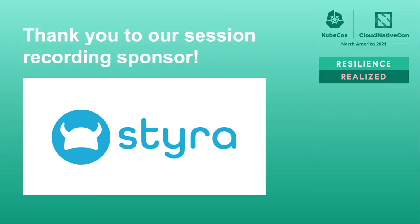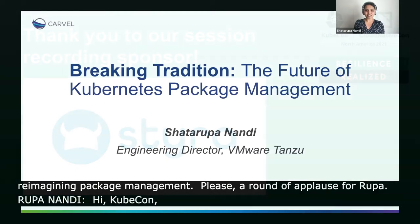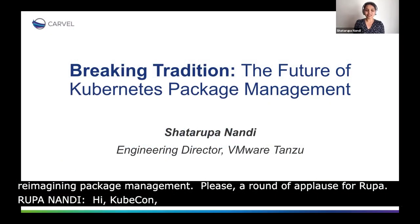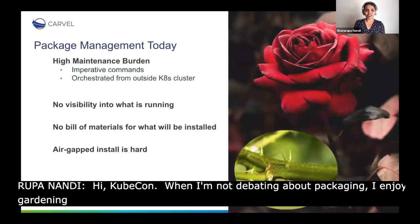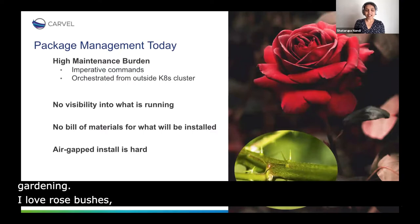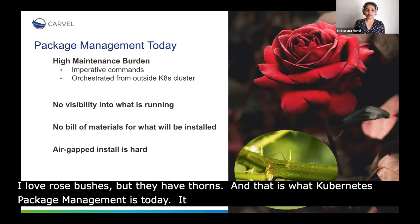I work on packaging and deployment tools at VMware Tanzu, and when I'm not passionately debating about packaging abstractions with my team, I enjoy gardening. I love rose bushes, but rose bushes have thorns, and that is what Kubernetes package management is today. It gets us started, but we often prick ourselves. What are these thorns?